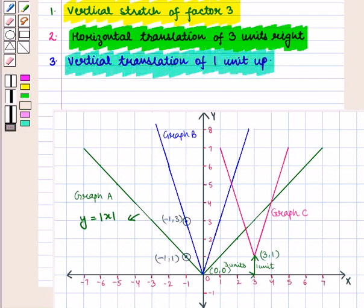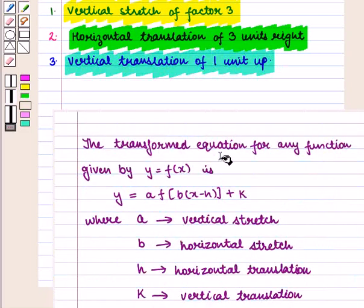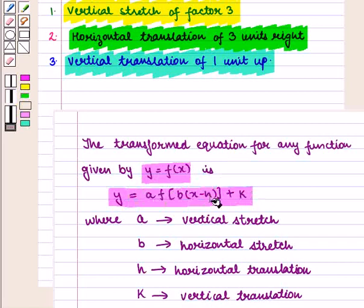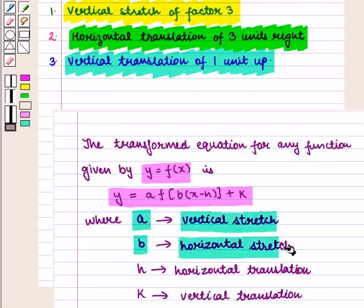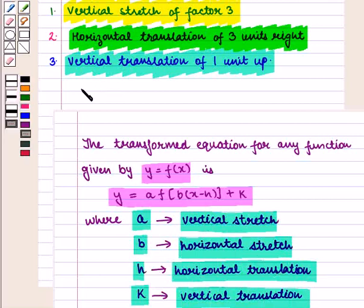Now we have to write the equation for graph C. We know that the transformed equation for any function y = f(x) is given by y = a·f(b·(x − h)) + k, where a is the vertical stretch, b is the horizontal stretch, h is the horizontal translation, and k is the vertical translation. Here a, the vertical stretch, is equal to 3.